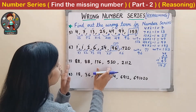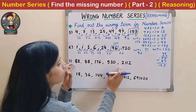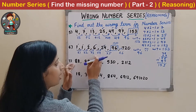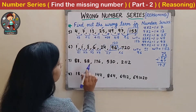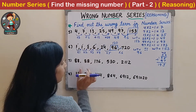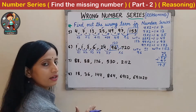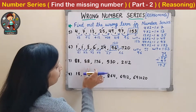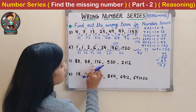Now the next question is also same as above: 88, 88. Both terms are same. Then the next term is 176, which is twice of 88. So here also multiplication by 1, then by 2 is going on.